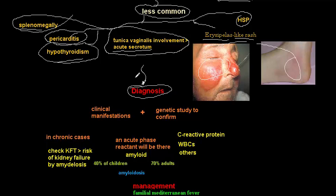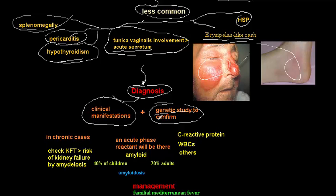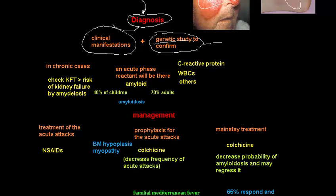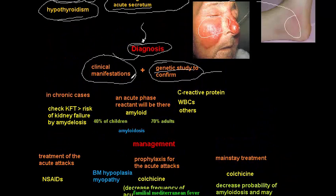Diagnosis of Familial Mediterranean Fever is based on clinical manifestations plus genetic study to confirm the disease. By genetic study, a mutation in the MEFV gene can be identified alongside clinical manifestations to make the diagnosis. Non-specific investigations include acute phase reactants such as amyloid, C-reactive protein, and white blood cells — all of which increase in FMF.